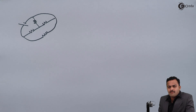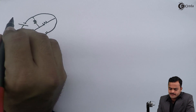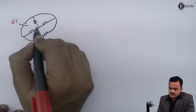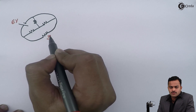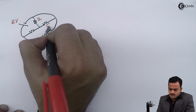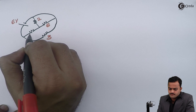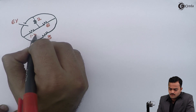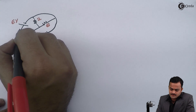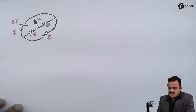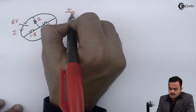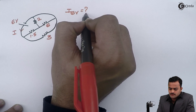Let's give values to the resistors and battery. The battery is 6 volts and the resistor values are: 3 ohm, 2 ohm, 6 ohm, and 1.5 ohm. The objective is to find the current given by the 6 volt battery.